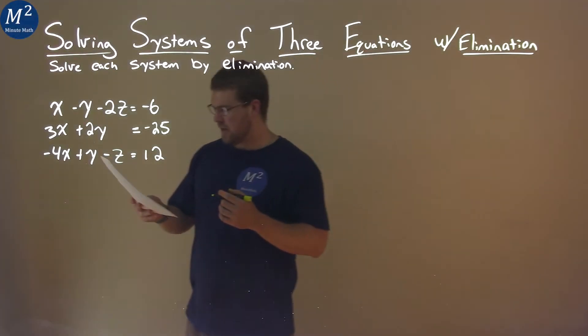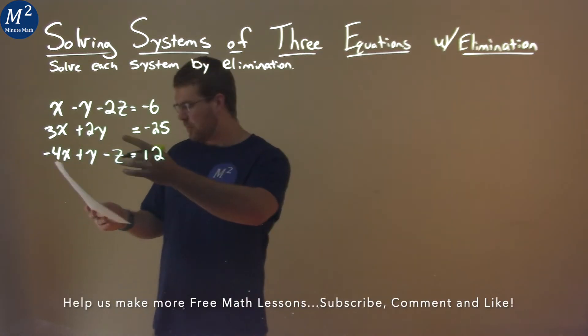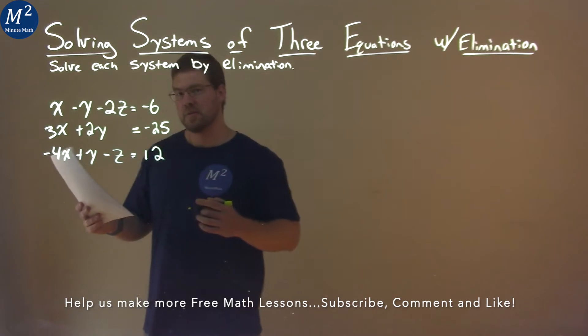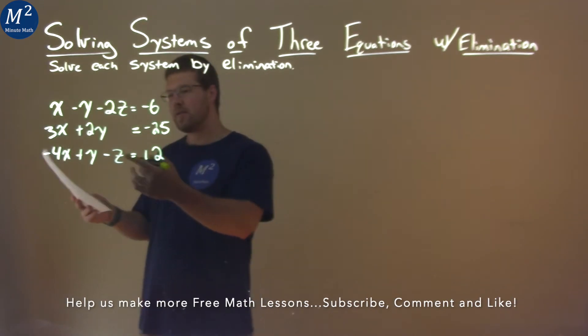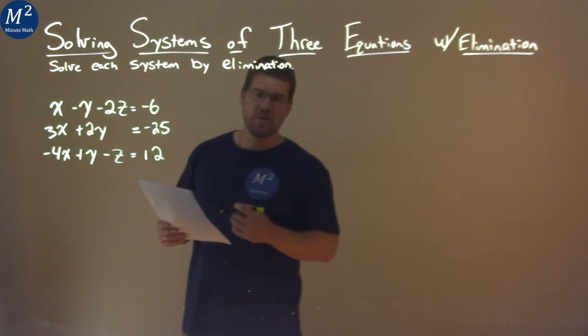We're given this problem right here: x minus y minus 2z equals negative 6, 3x plus 2y equals negative 25, and negative 4x plus y minus z equals 12. We need to solve this by elimination.